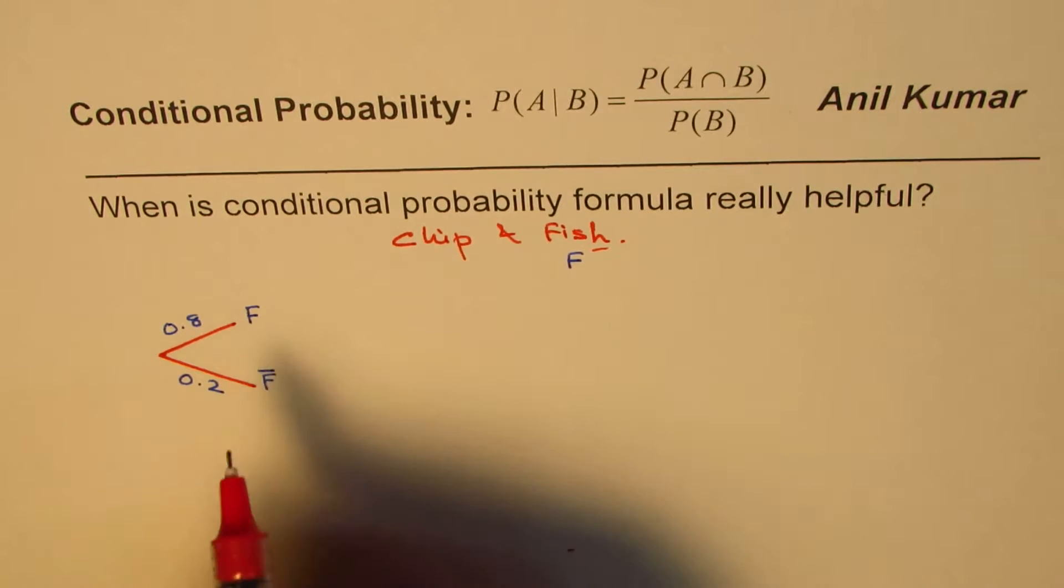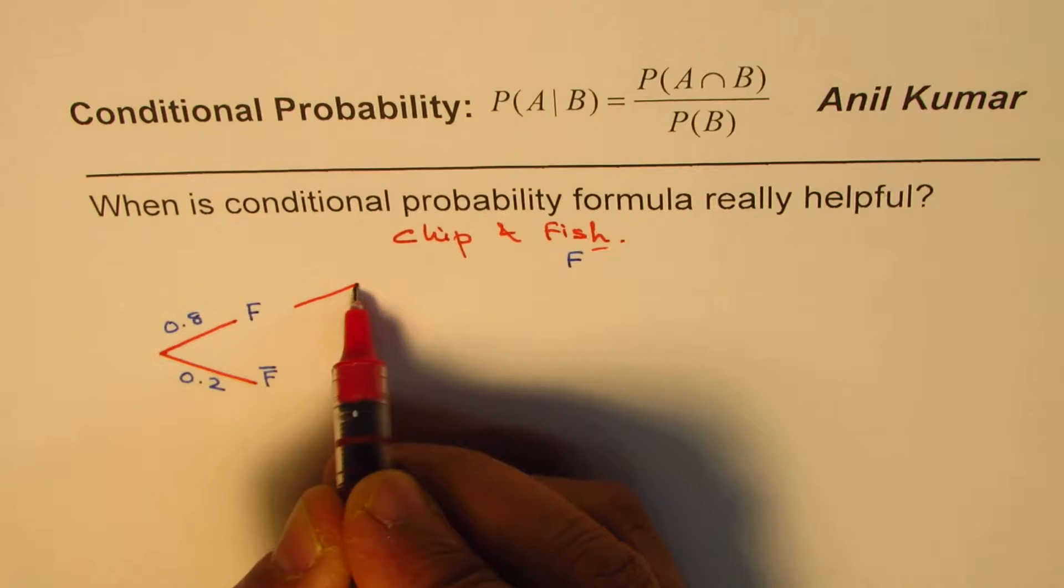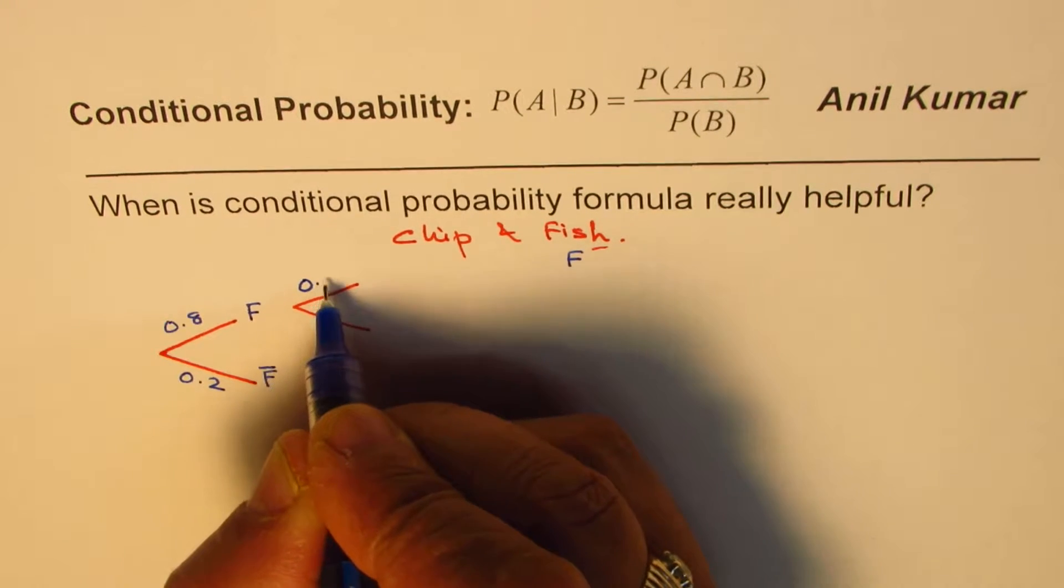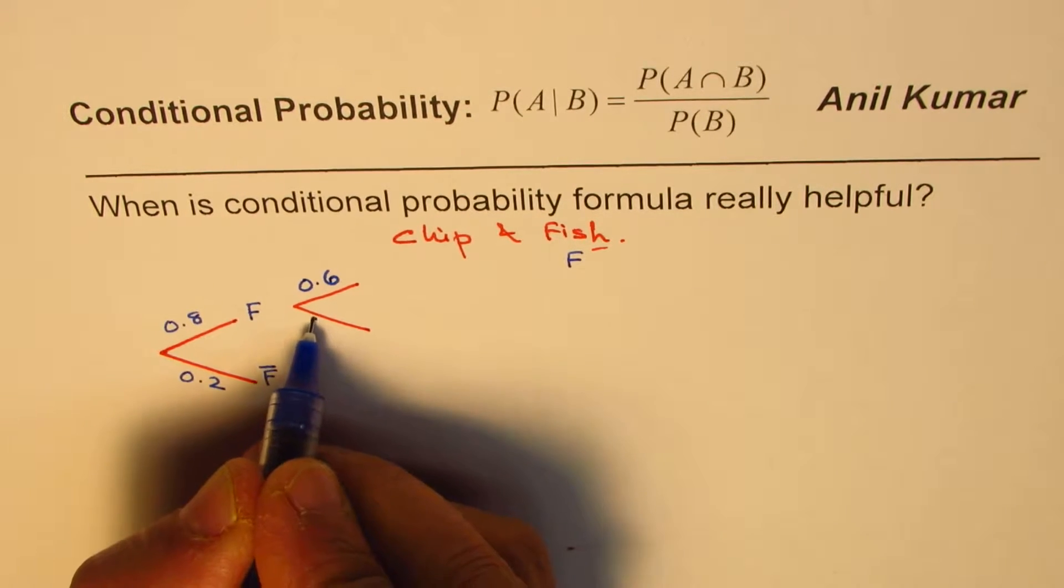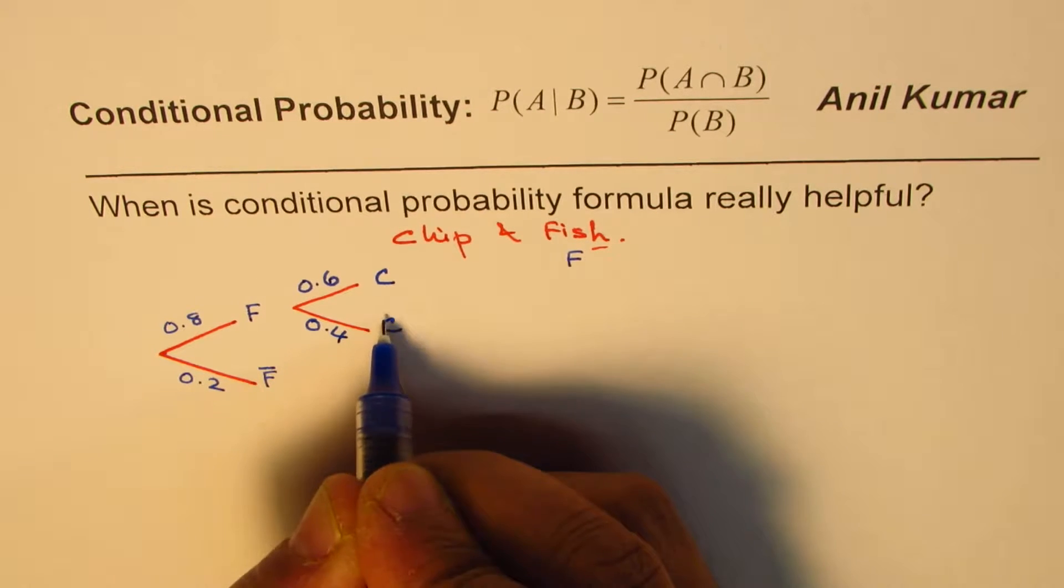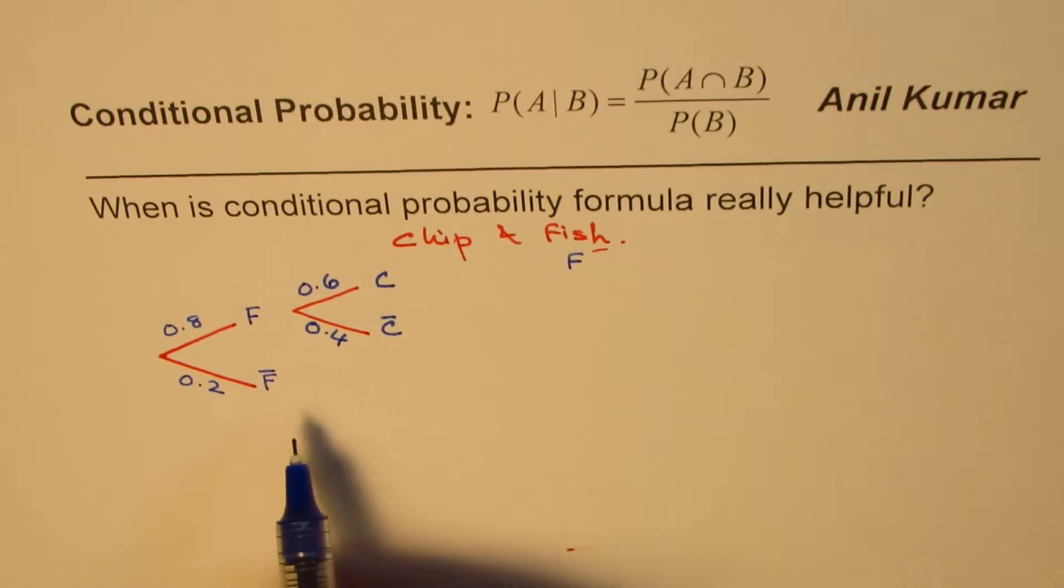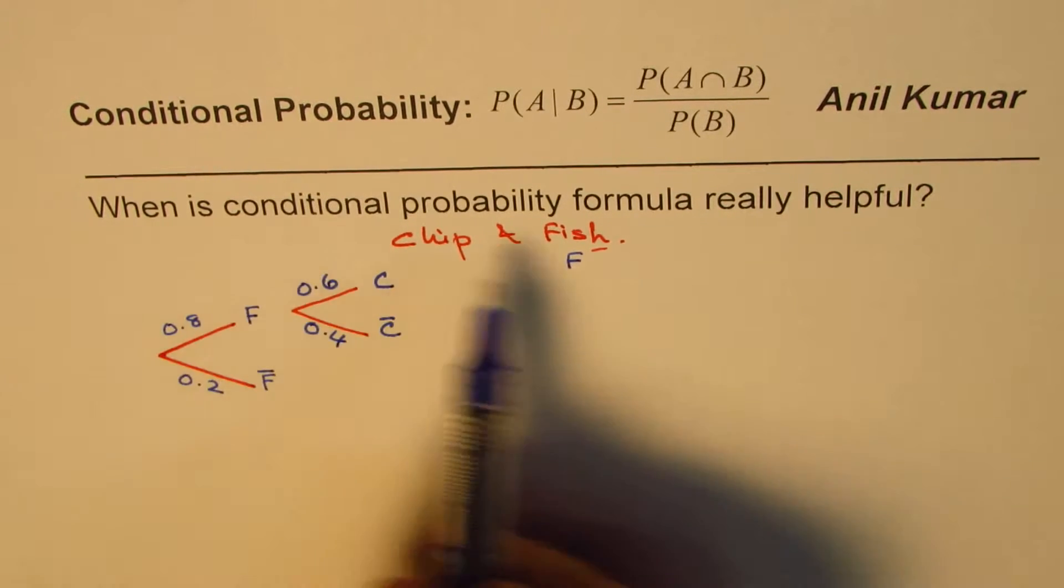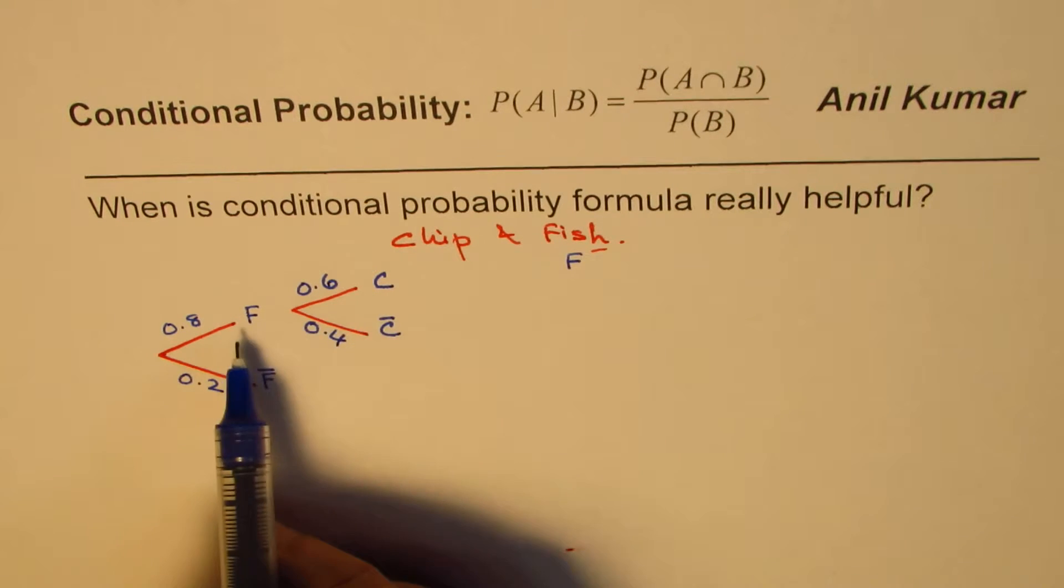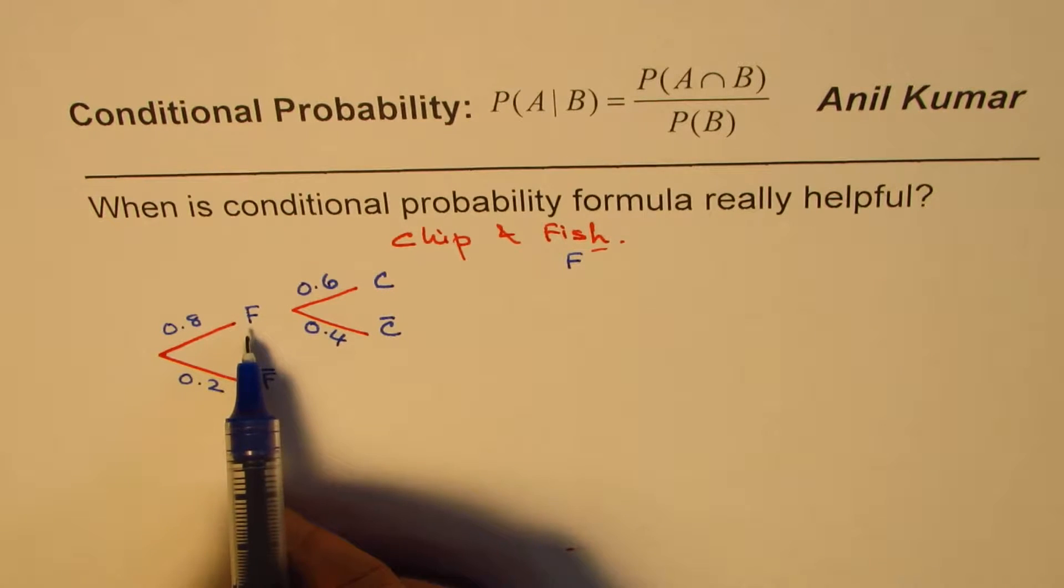Now, one more interesting thing here is that those who order for fish, they would normally order for chips also. And the percent of such people who are ordering for chips is slightly higher, 60%. And not for chips but something else will be then 40%. So we will call this as C for chips and not chips.